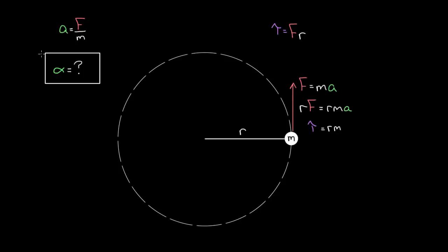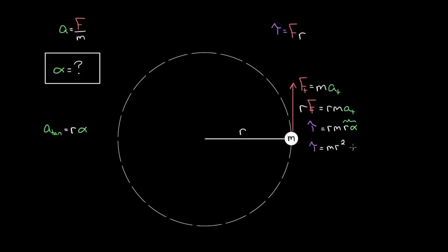What could I replace regular acceleration with in order to get angular acceleration? When we talked about angular motion variables, the tangential acceleration is always gonna equal the distance from the axis to that object multiplied by the angular acceleration alpha. Since we took the tangential force, that's gonna be proportional to the tangential acceleration. So I can rewrite the tangential acceleration as R times alpha, giving us torque equals R times M times R times alpha.